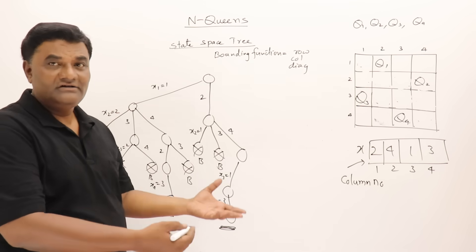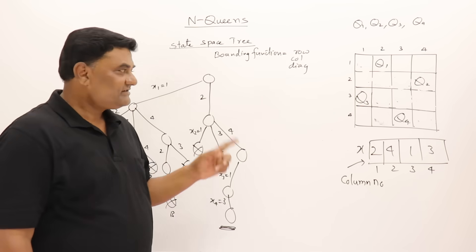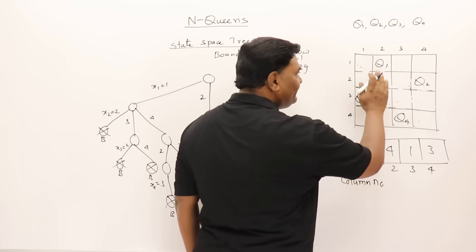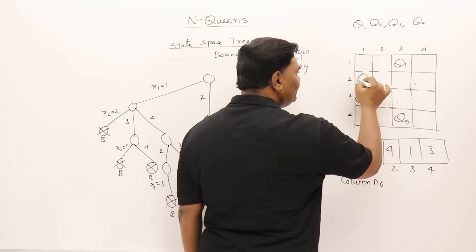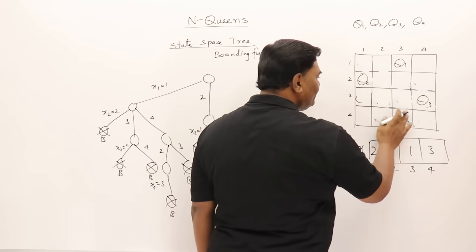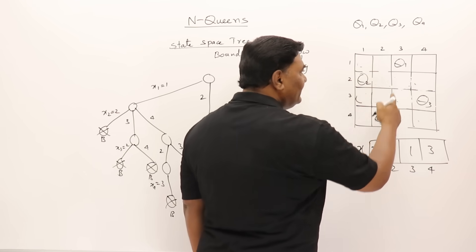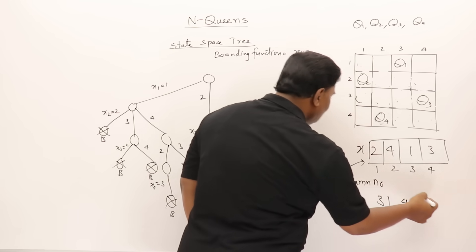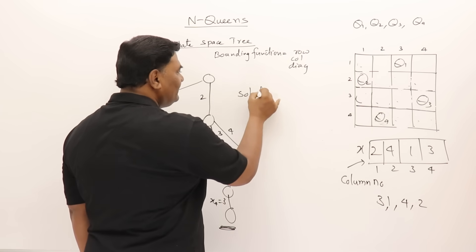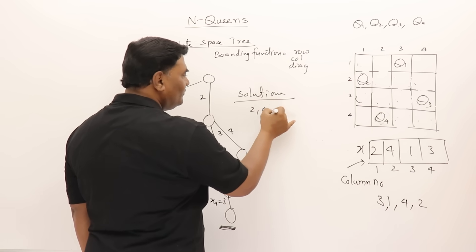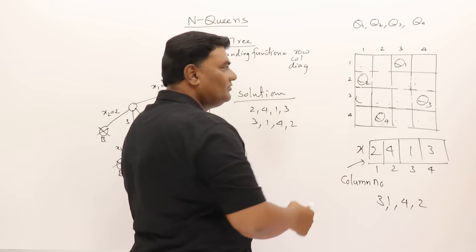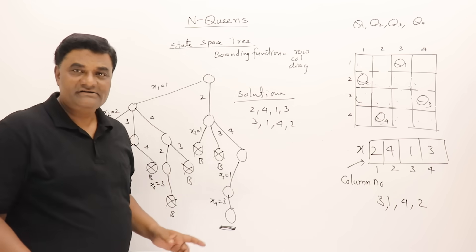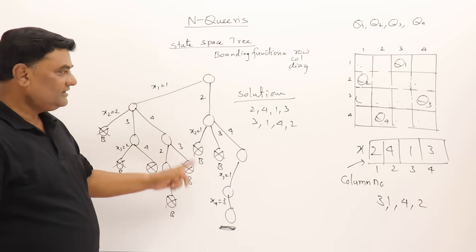Continuing further, there is one more answer — the mirror image of the first solution. So queen one on the other side gives the arrangement 3, 1, 4, 2. The two solutions for the 4-queens problem are: 2 4 1 3 and 3 1 4 2. This demonstrates how the state space tree with bounding function and backtracking finds all valid solutions.